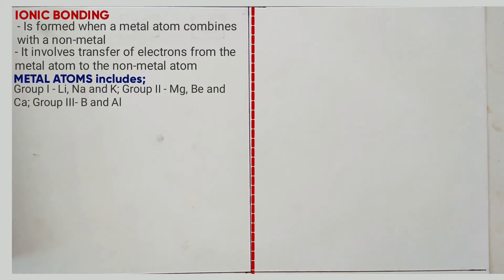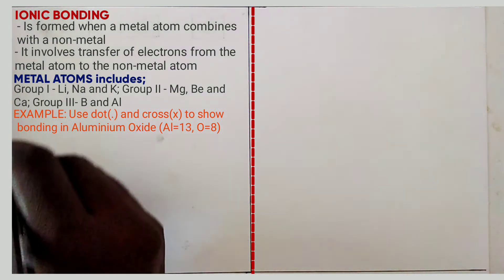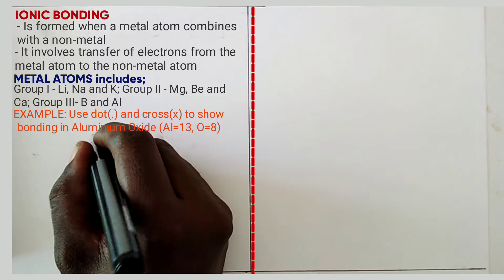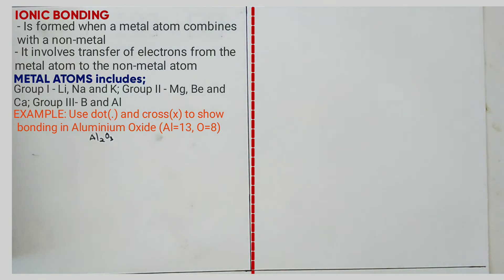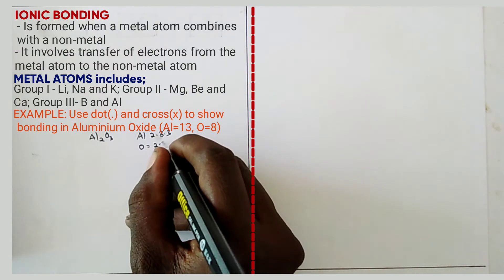Let's look at an example of how to draw ionic bonds. Example number one: use dot and cross to show bonding in aluminium oxide. Aluminium has atomic number 13, oxygen has atomic number 8. Step one is to write the formula first. The formula of aluminium oxide is Al₂O₃. Step two: write the electron configuration of each atom. Aluminium is 2.8.3 and oxygen is 2.6.